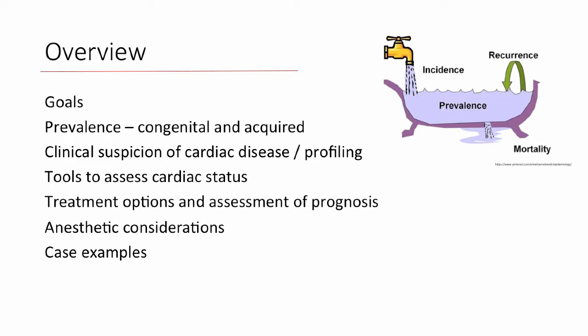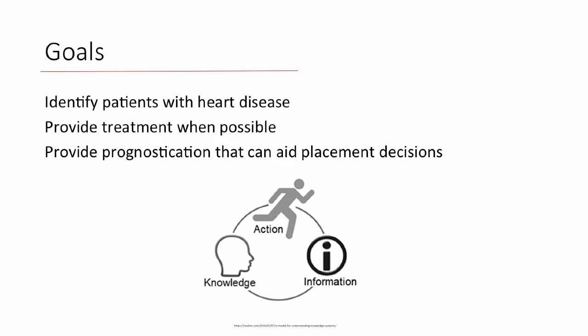I want to talk about clinical profiling to arrive at a diagnosis of cardiac disease and what tools we have beyond physical examination for making our diagnosis. These can lead us to treatment options and prognostication. We'll touch briefly on anesthetic considerations using case examples and some specific diseases. Our goals are similar whether you're in a referral, shelter, or GP setting: we want to accurately identify patients with heart disease so we can decide how best to treat and prognosticate for that dog or cat.